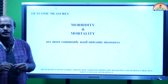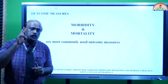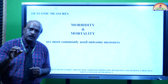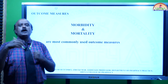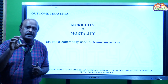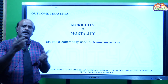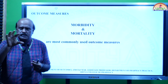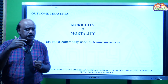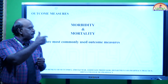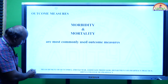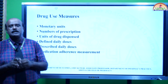Coming first to outcome measures, there are two critical terms: morbidity and mortality. Morbidity refers to any disease condition in a person, whereas mortality means the occurrence of death. We can do outcome measures by measuring both mortality and morbidity.